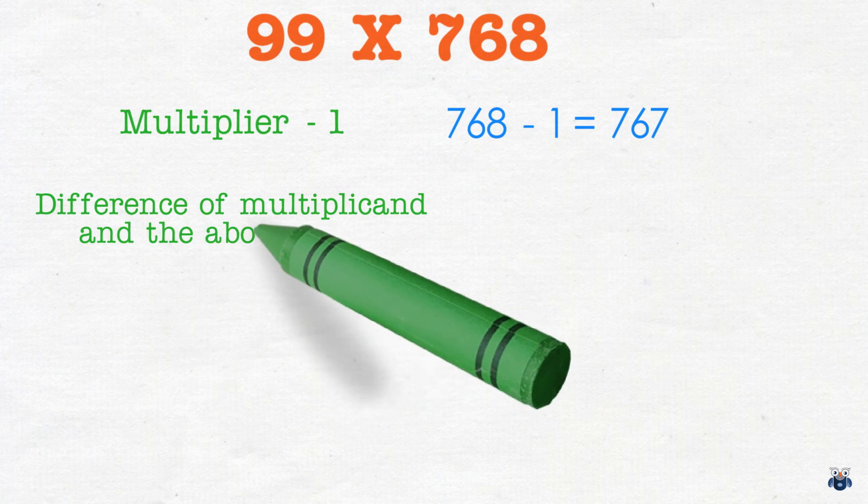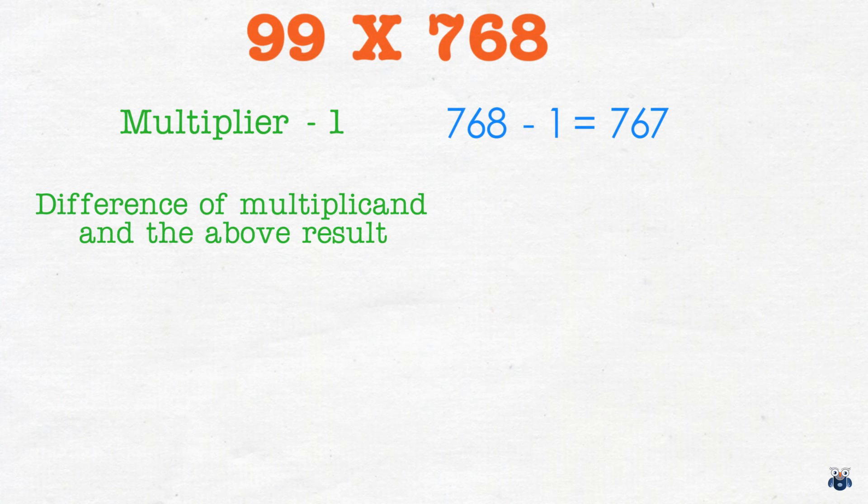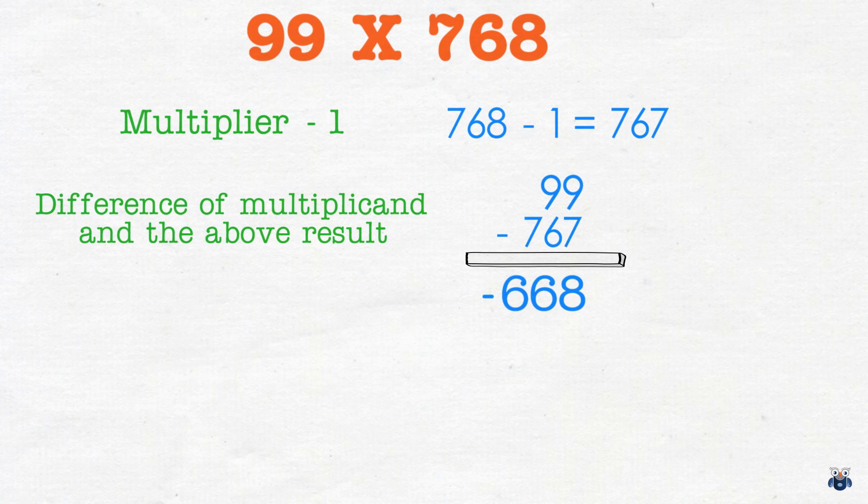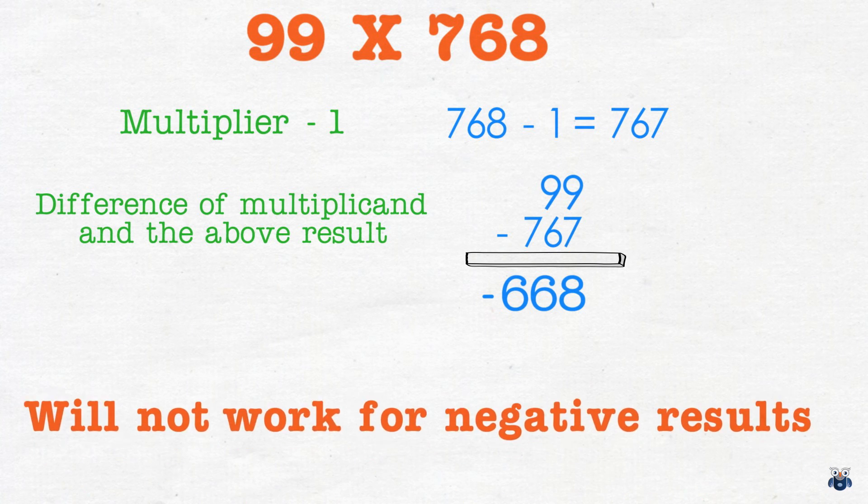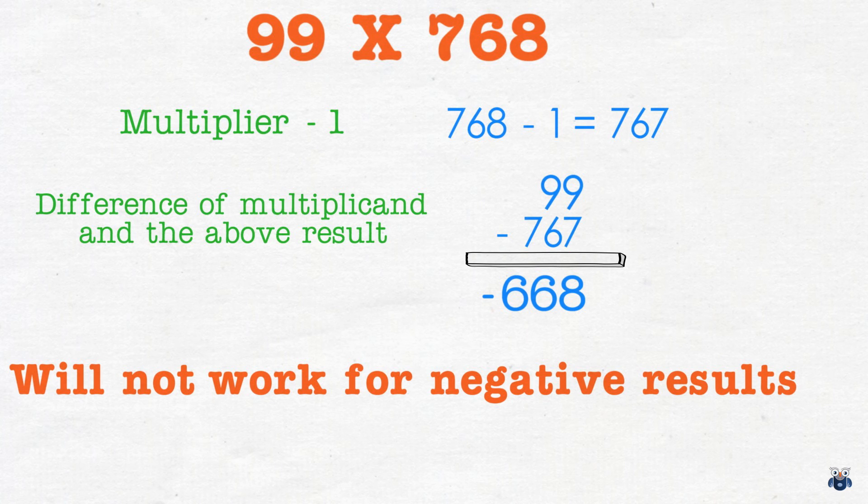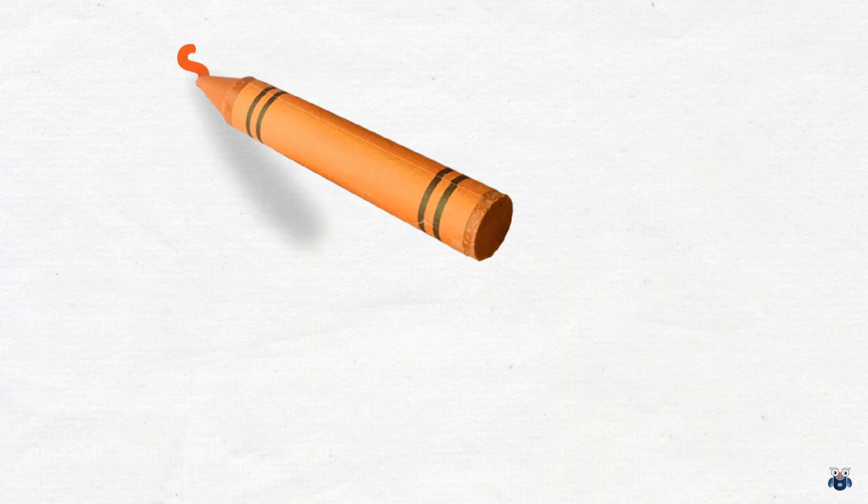We then find the difference of the multiplicand and the above result. 99 minus 767 gives us a negative result which is minus 668. This does not look right. As you can see this method does not work when the number of 9's in the multiplicand is less than the number of digits in the multiplier.